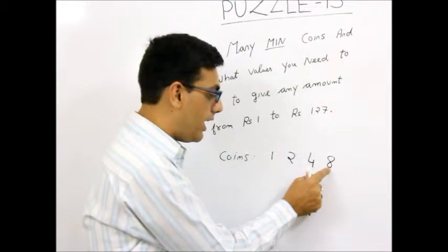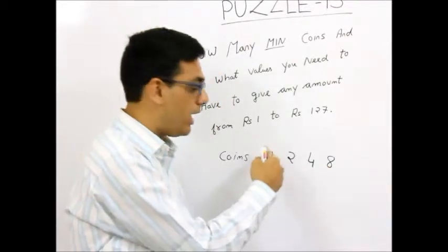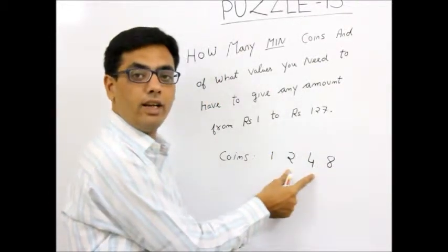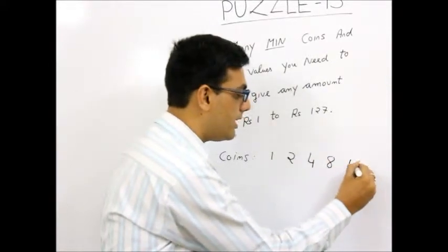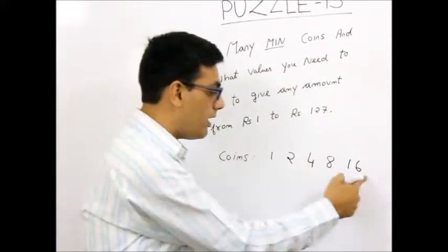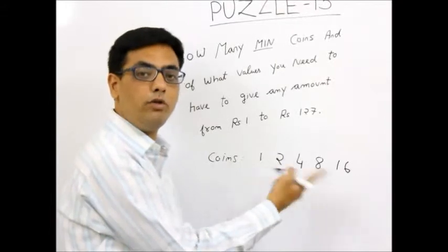Now if you apply the same logic, 8 plus 4 plus 2 plus 1 is 15. So anything from 1 to 15 can be taken care of. And therefore I definitely need a 16 rupee coin. Now if you understand clearly, these are nothing but powers of 2.